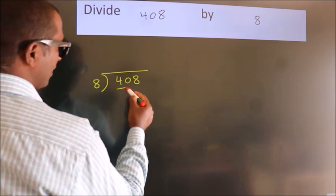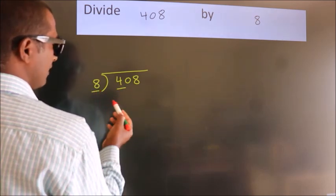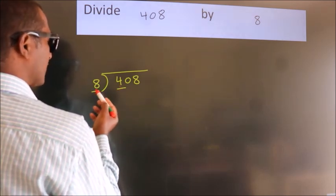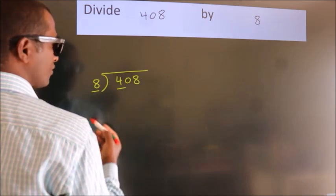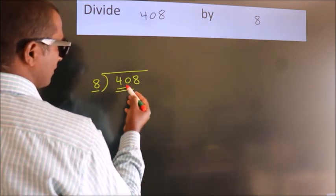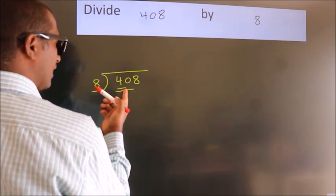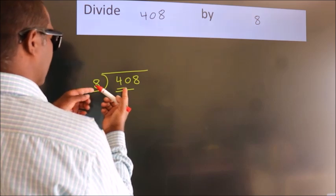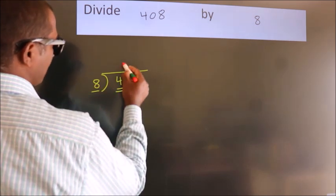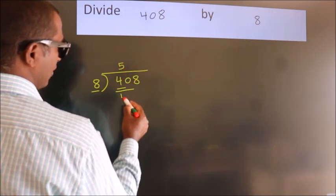Here we have 4, here 8. 4 smaller than 8. So we should take two numbers: 40. When do we get 40? In 8 table. 8 fives, 40.